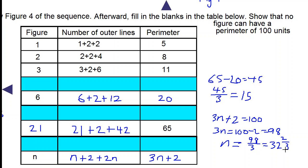So we are unable to get a positive whole number, and there's no figure called figure 32 and 2 thirds, it has to be a positive whole number. Therefore, no figure can have a perimeter of 100 units, since the figure number is not a positive whole number.